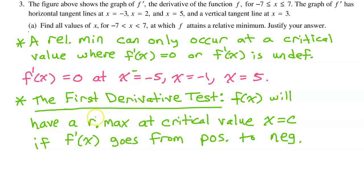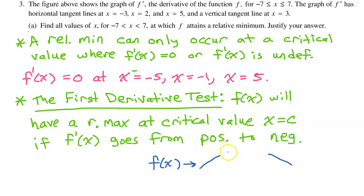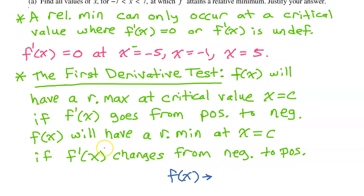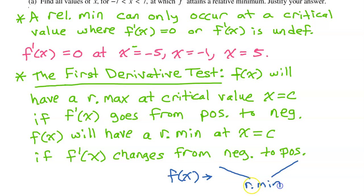According to the first derivative test, f of x will have a relative max at critical value x equals c if f prime goes from positive to negative. This makes sense because if the derivative is positive, the original function is increasing, and if the derivative is negative, f of x is decreasing — so we would have a relative max at the top of that hill. Similarly, f of x will have a relative min at x equals c if f prime changes from negative to positive.